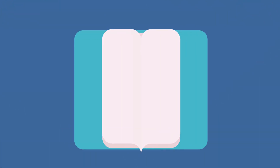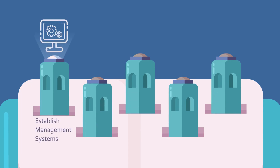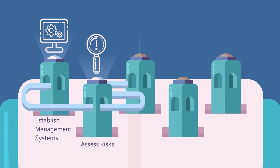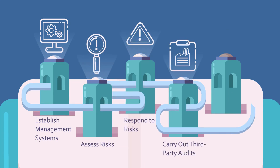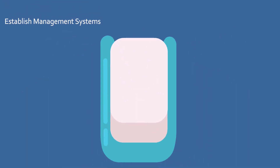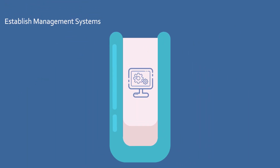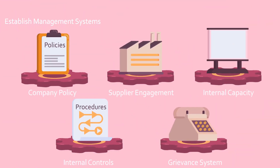OECD Guidance outlines a five-step due diligence process to be integrated into your company management systems. Let's take a closer look at how to carry out each step, wherever you are — from mine to end user. To begin with, the Guidance calls for establishing strong company management systems, and there are five parts.